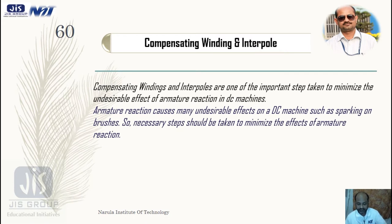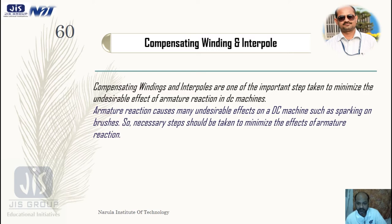Whether it is a compensating winding or an interpole, both are used to minimize the undesirable effects of armature reaction. The undesirable effect is sparking on the brushes, which we have discussed. This sparking of brushes is detrimental for the DC machine, so we should take necessary steps to minimize the effect of armature reaction.